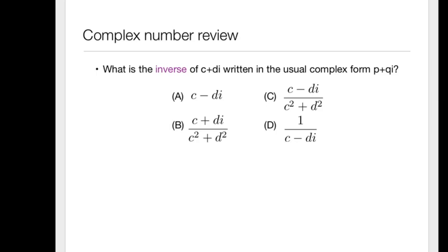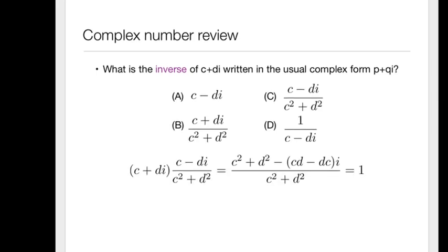So this requires that you remember what the definition of an inverse is, or maybe you need to know. So the definition of an inverse, as I'm showing here, is a question, what complex number do I have to multiply c plus di by to get one? Right? So what do I have to multiply two by to get one? Well, one half. So if I multiply c plus di by c minus di over c squared plus d squared,